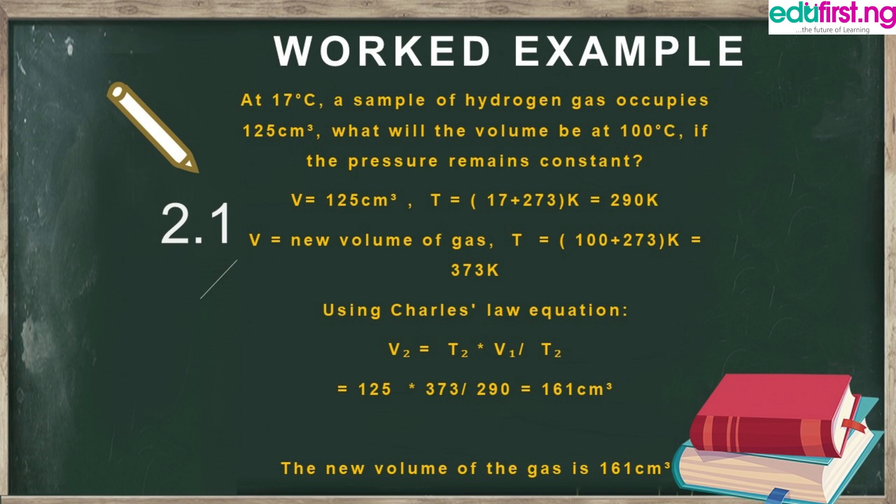We are looking for V₂, and T₂ = 100°C converted to Kelvin gives 373 K. Applying the Charles' Law equation and making V₂ the subject: V₂ = (T₂ × V₁) / T₁ = (125 × 373) / 290, which gives us 161 cm³. So the new volume of the gas is 161 cm³.